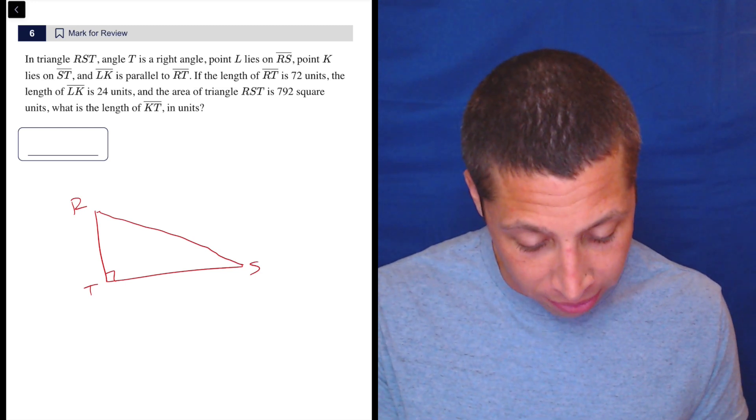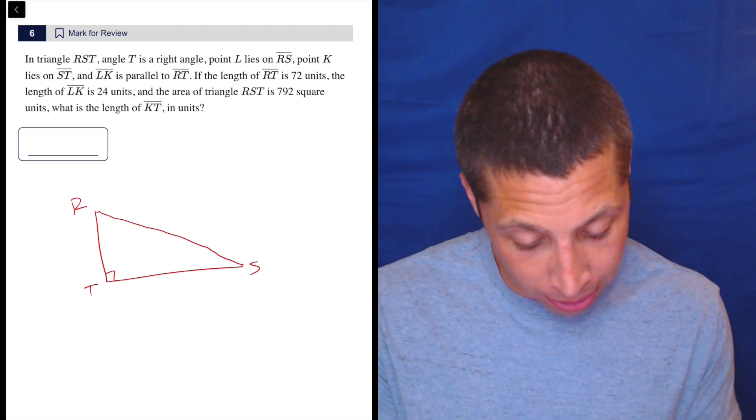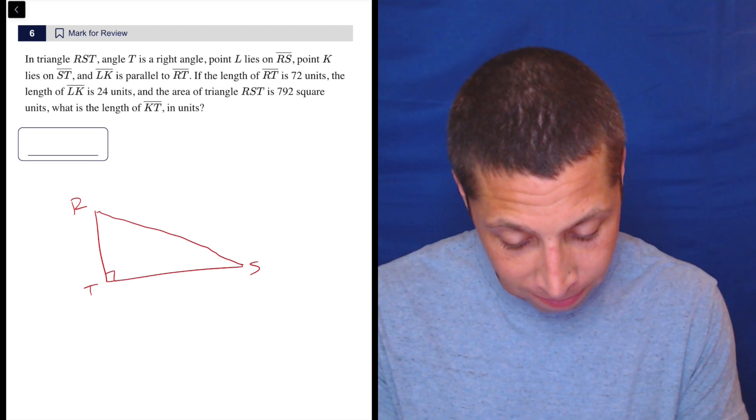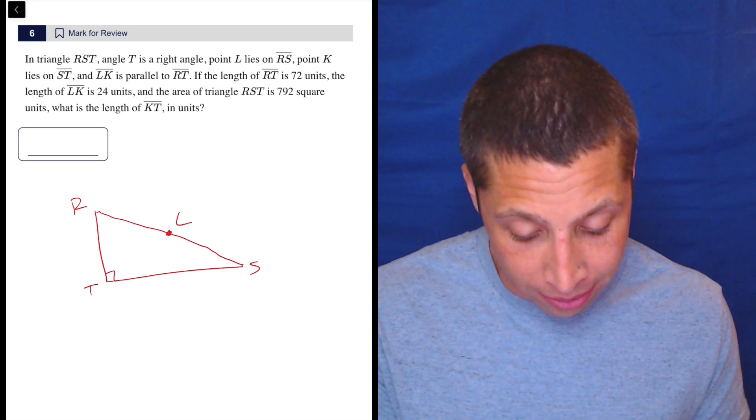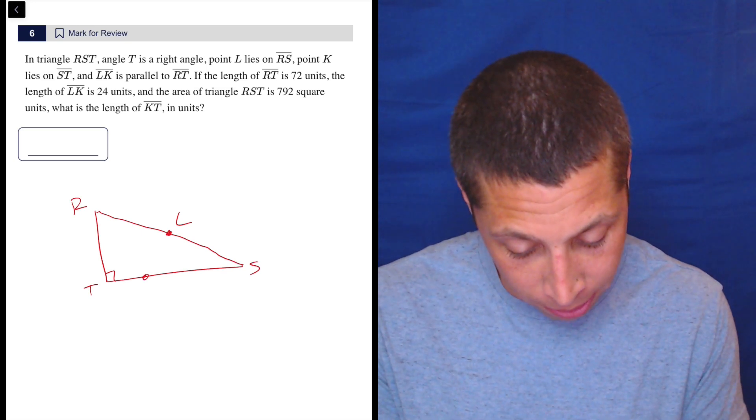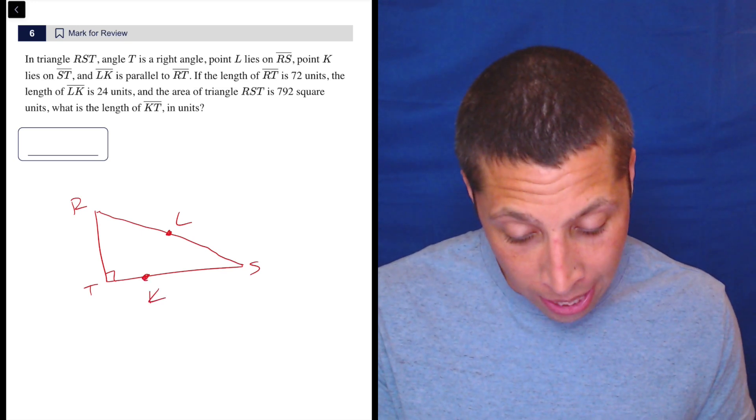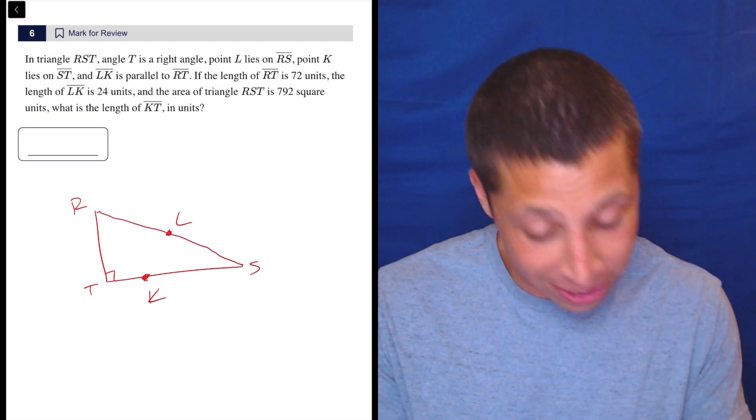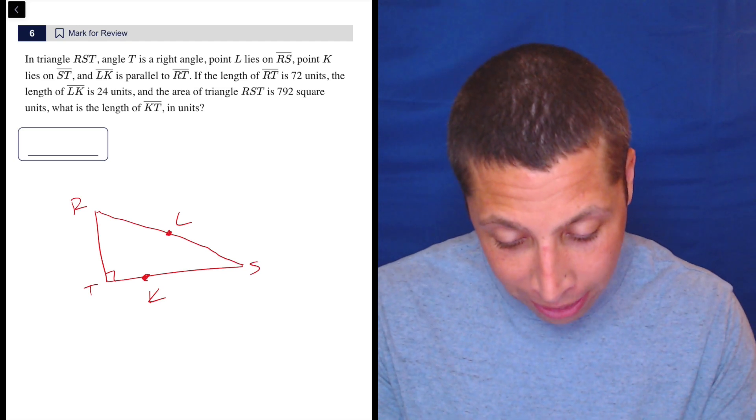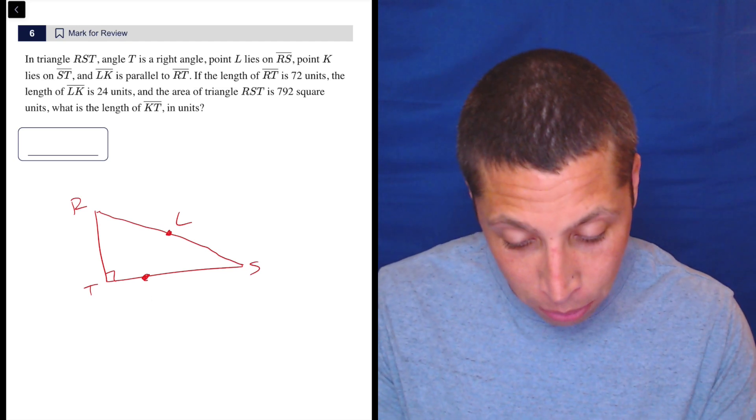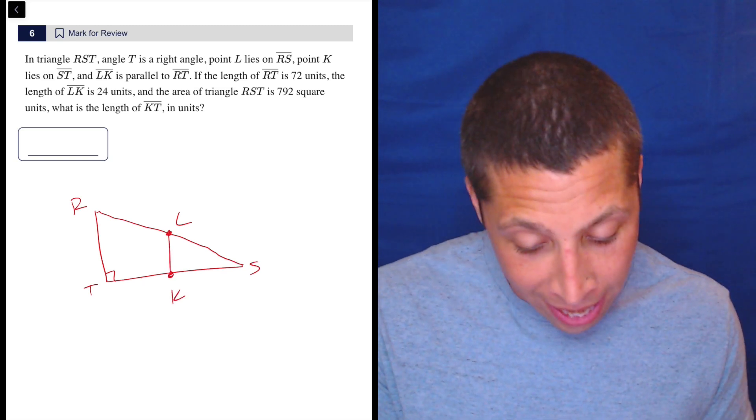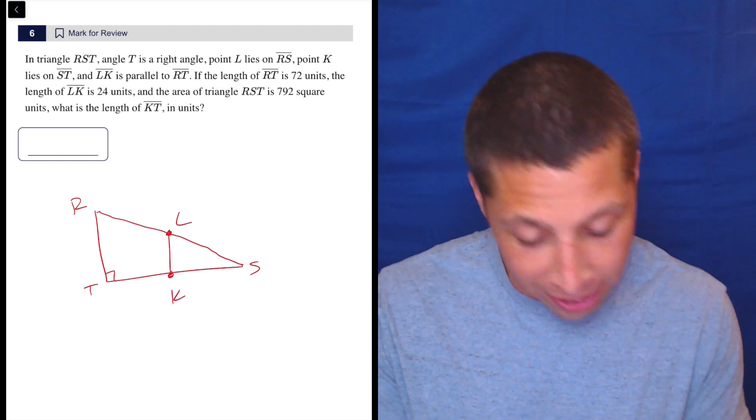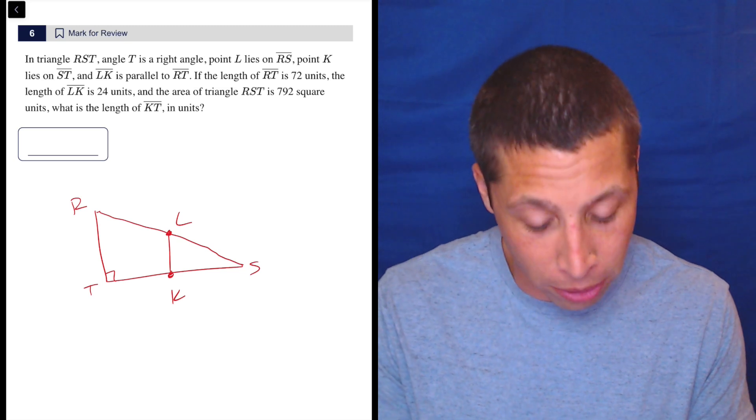Point L lies on RS. Okay, so point L, I don't know, let's just put it here in the middle somewhere. Point K lies on ST. So okay, kind of here. And LK is parallel to RT. Well see, there you go. I made a mistake. Let's back it up so that when we put point K, we can make L and K parallel to RT. That looks pretty good, which means also I'm going to put it on there right now, that this is going to be a right angle as well.